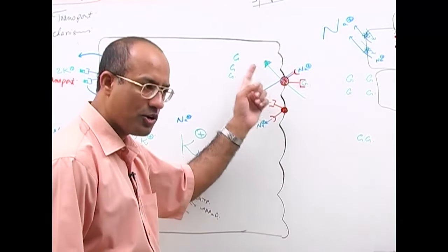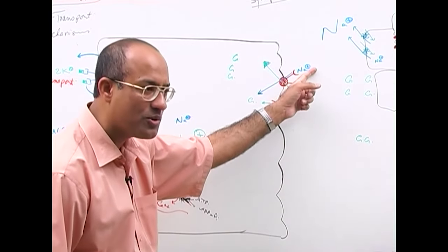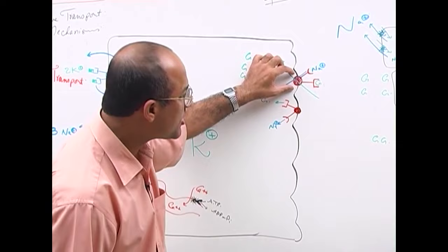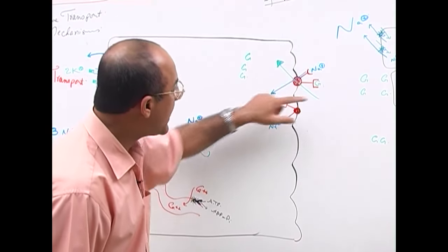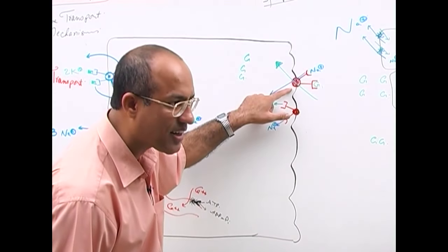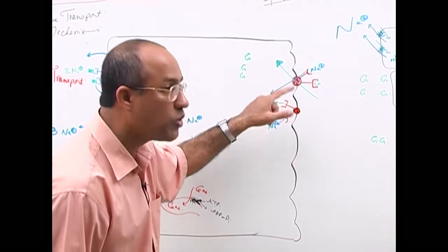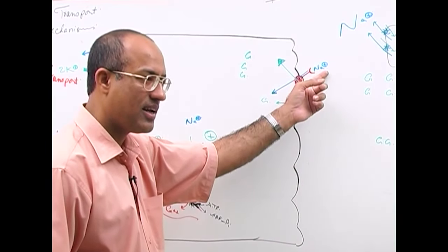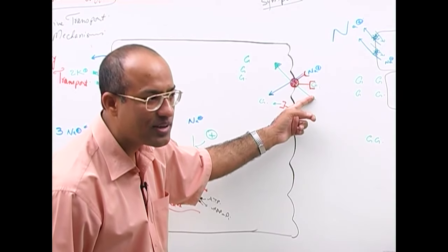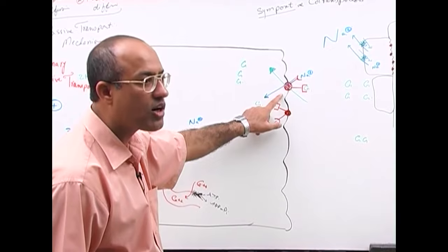The sodium-glucose co-transporter transports sodium as facilitated diffusion and glucose as active transport. However, ATP is not directly utilized at this transporter, so it is not primary active transport.